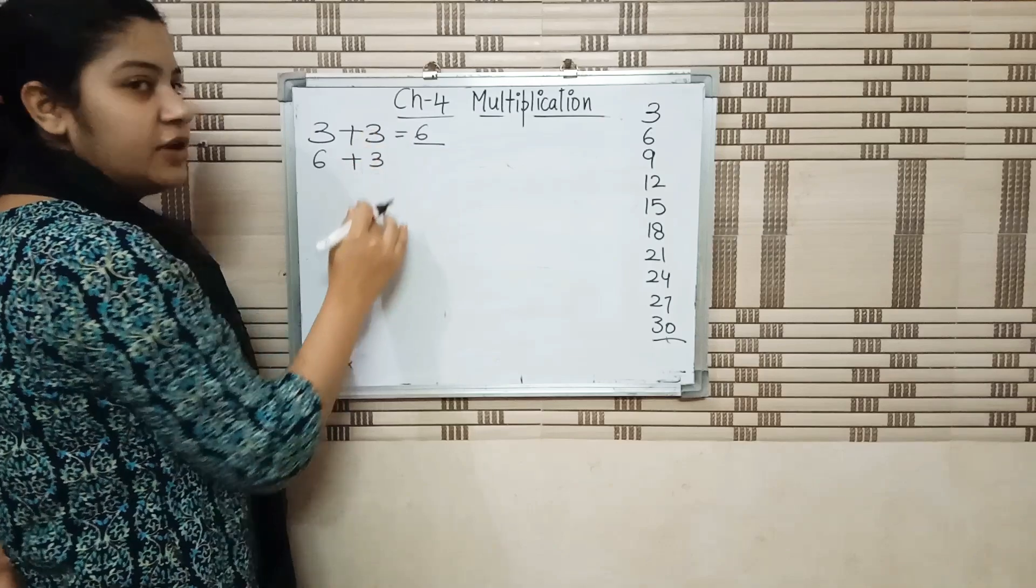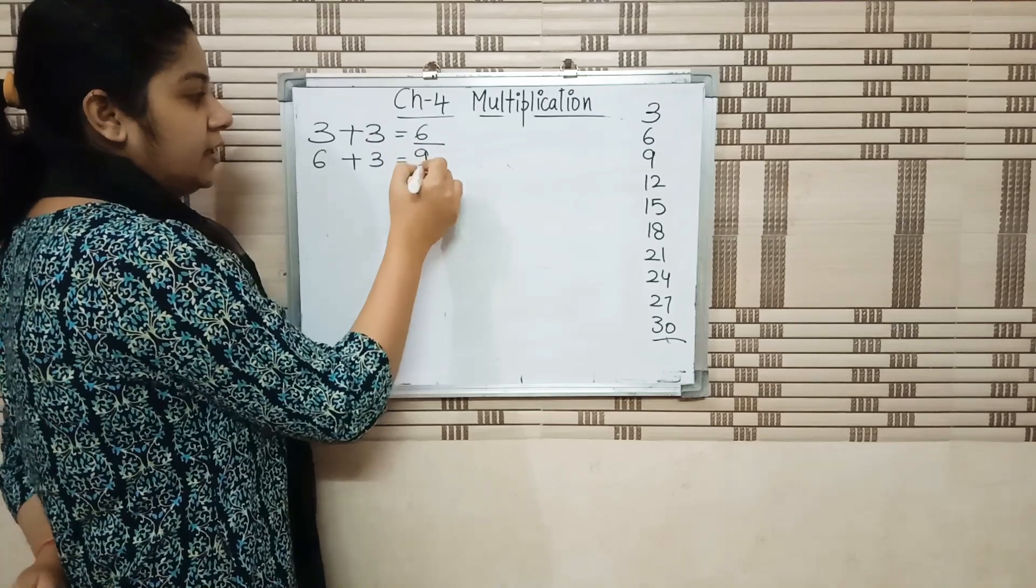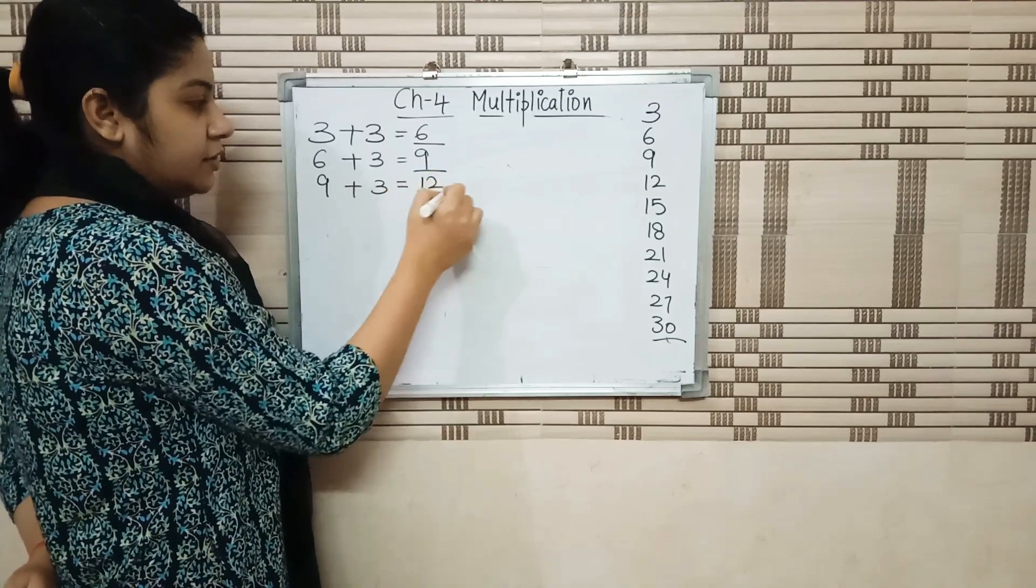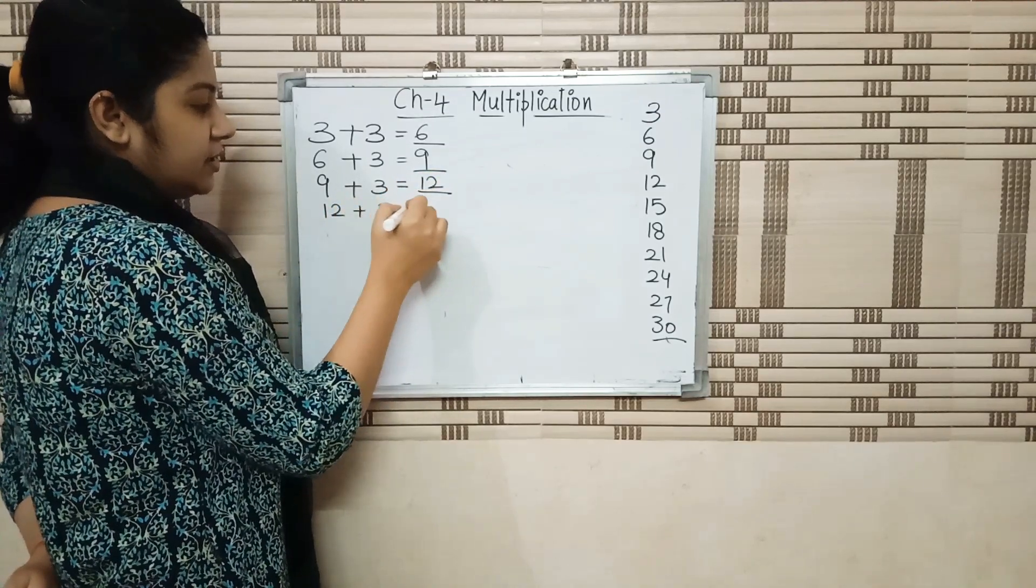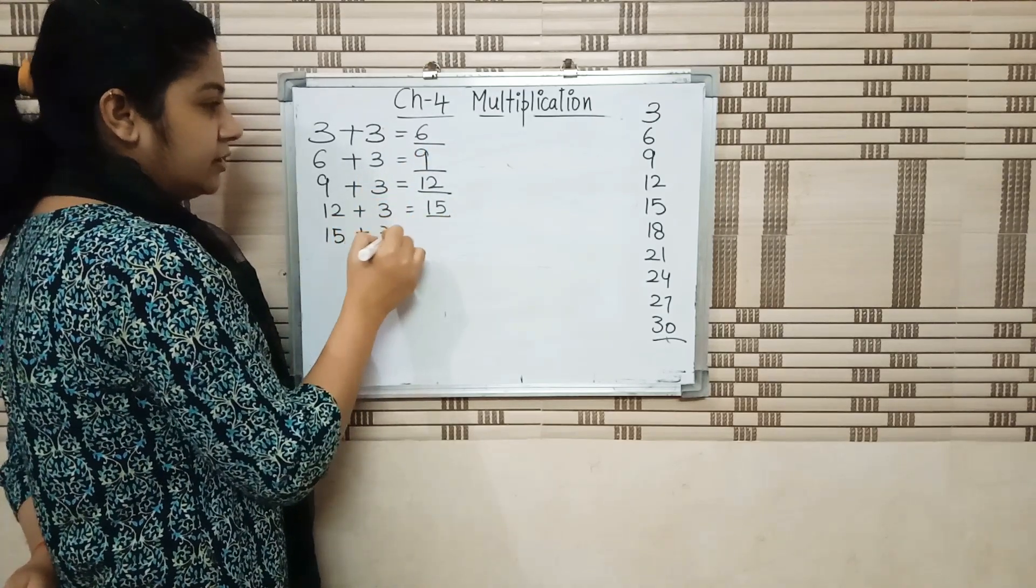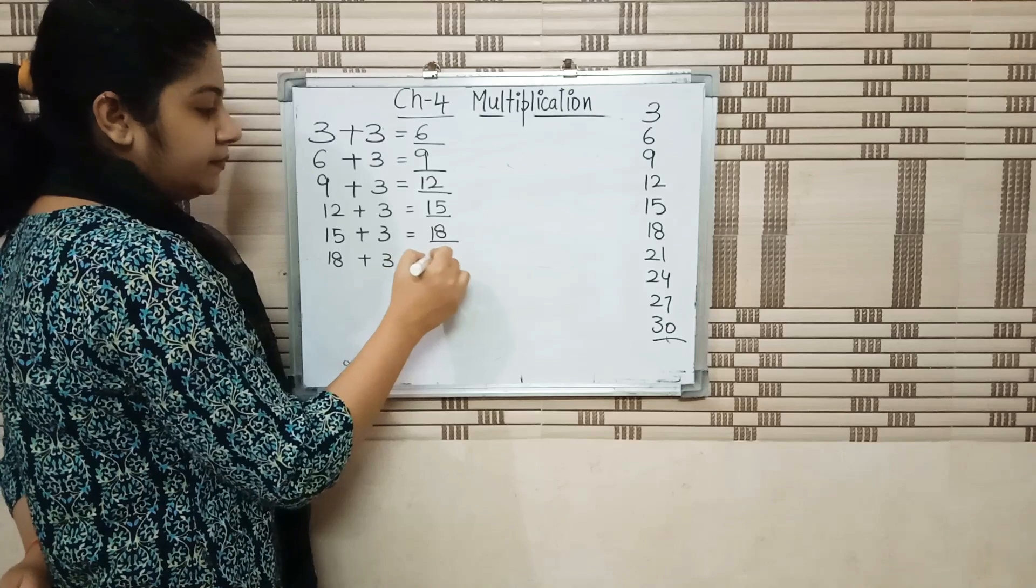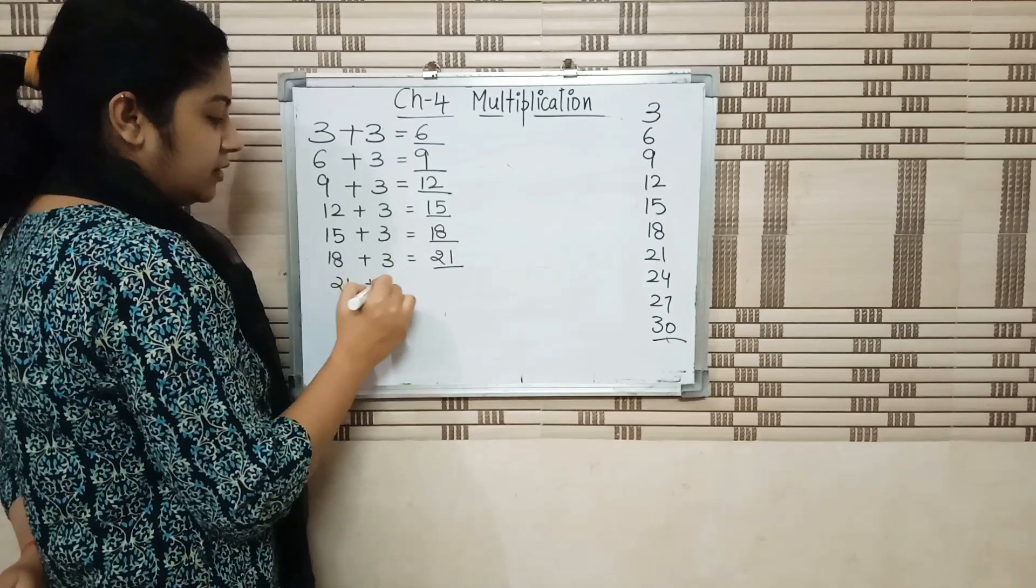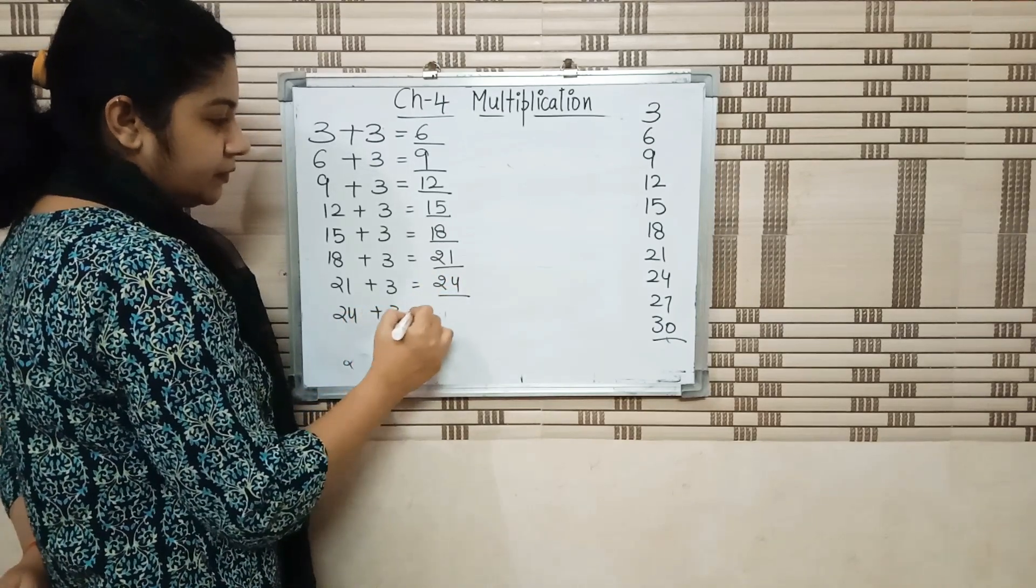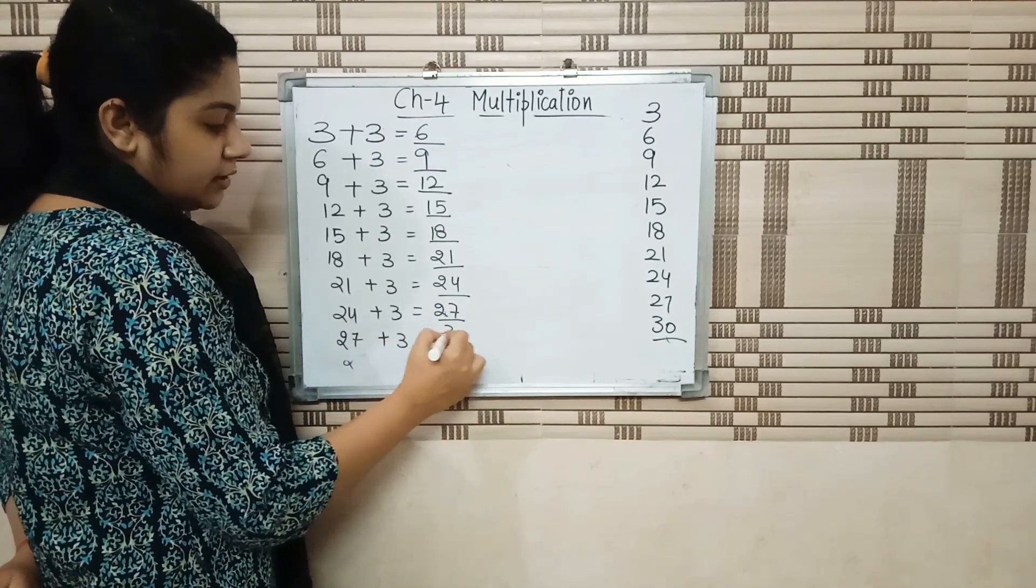Write 6, then again repeat 3. We repeat 3 because we are making table of 3. 6 plus 3 equals 9. Write 9. 9 plus again 3 is 12. Write 12. 12 plus 3 equals 15. We are doing repeated addition. 15 plus 3 is 18. 18 plus 3 is 21. 21 plus 3 is 24. 24 plus 3 is 27. And 27 plus 3 equals to 30.